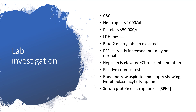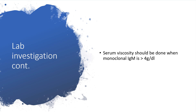Beta-2-microglobulin will be elevated. Erythrocyte sedimentation rate will be greatly increased, but don't be surprised — it might be within the normal range. CRP will be elevated, giving us signs of chronic inflammation. When you run the Coombs test, it might be positive. Bone marrow aspirate and biopsy will show lymphoplasmacytic lymphoma, and you can run serum protein electrophoresis. Serum viscosity should be assessed when IgM is greater than 4 grams per liter, because the red blood cells will clump together, forming rouleaux formation, leading to hyperviscosity.